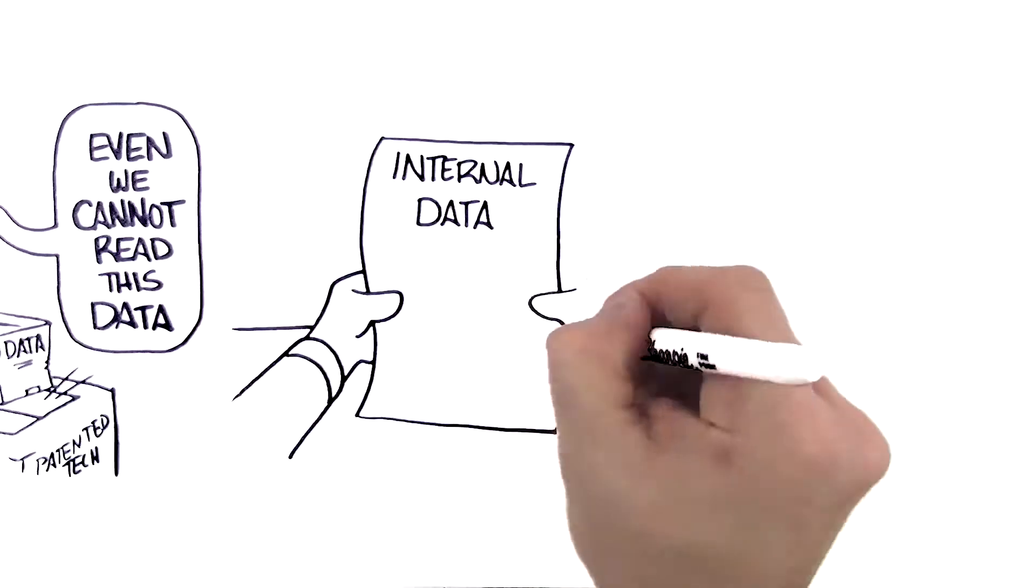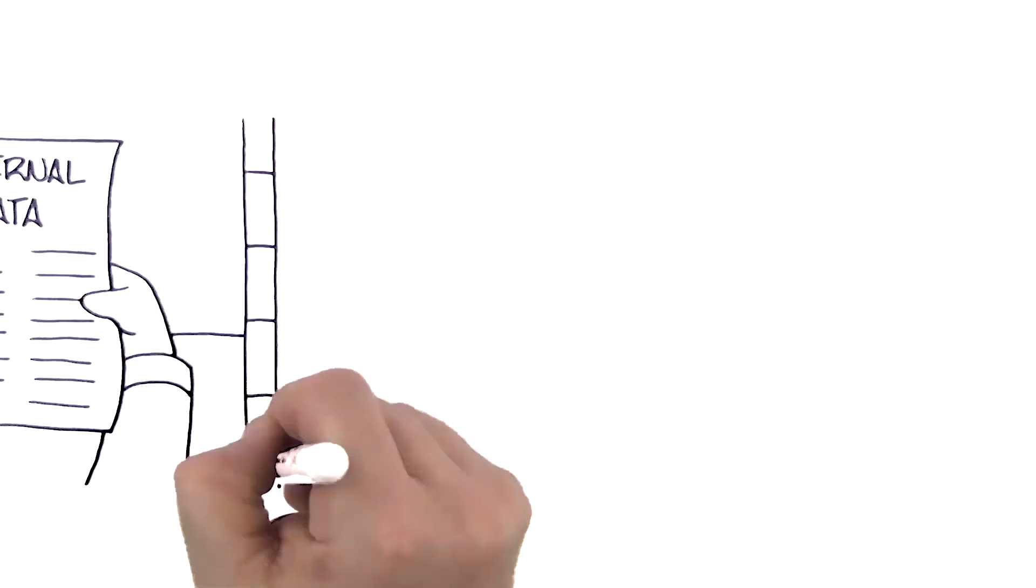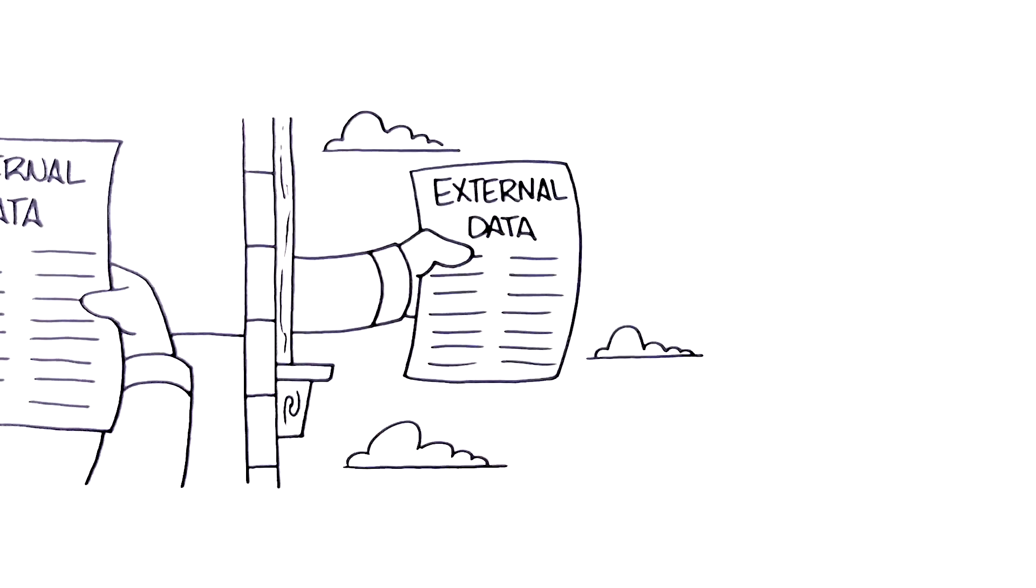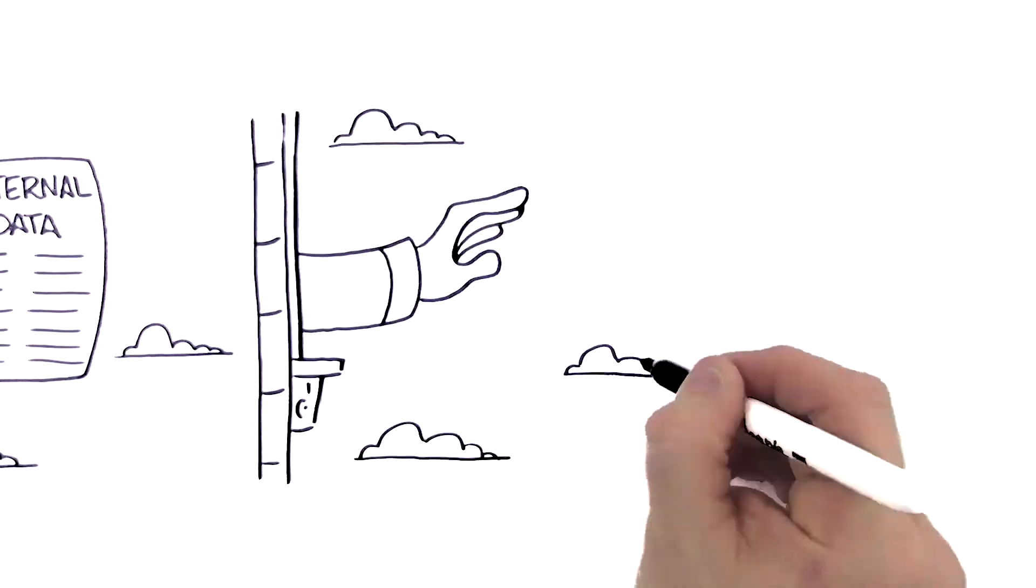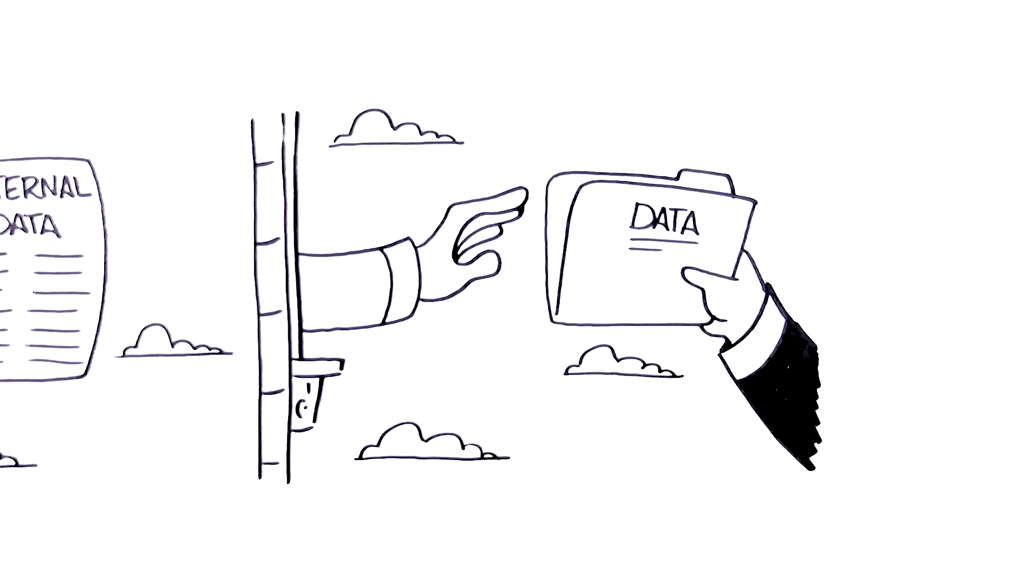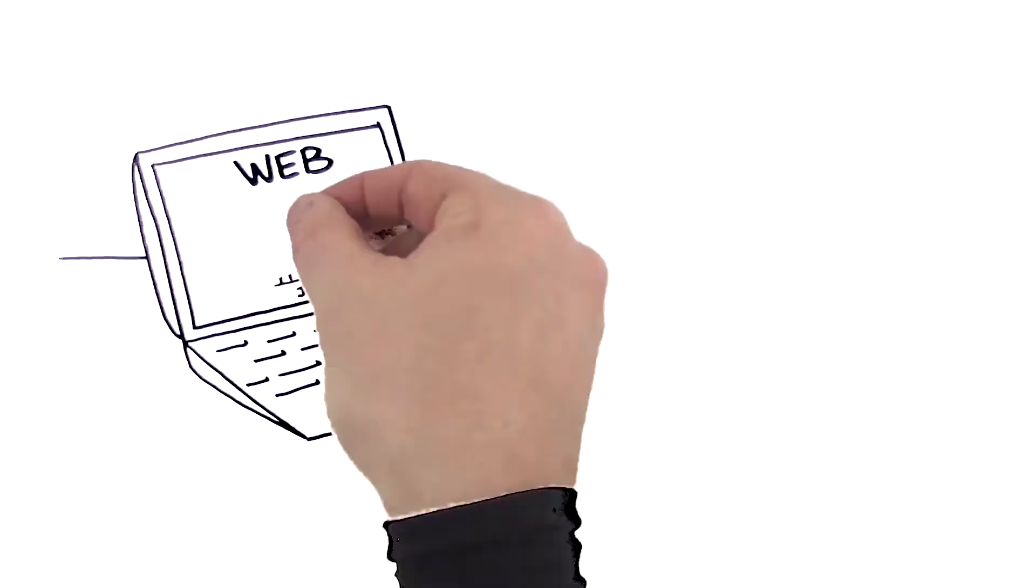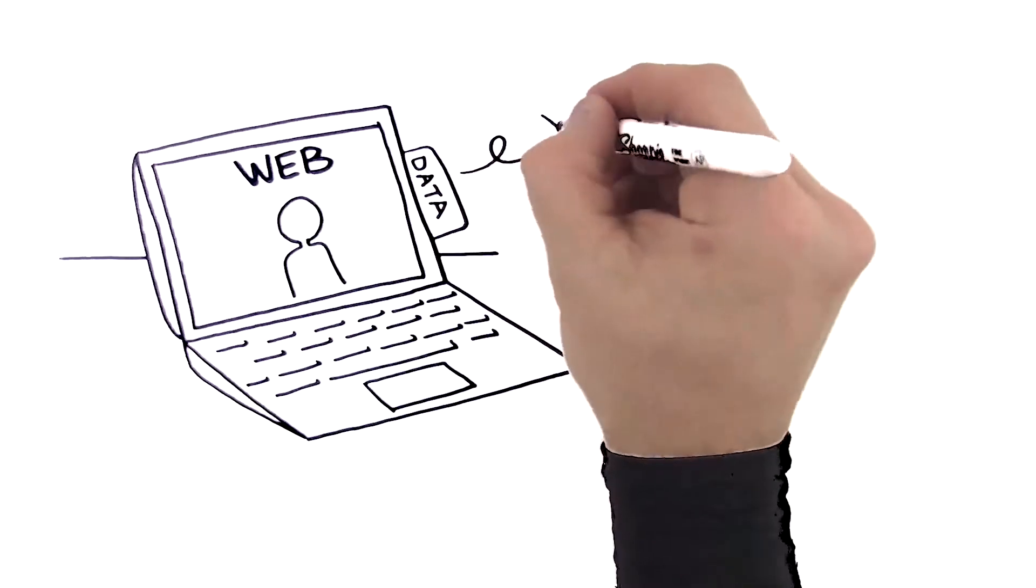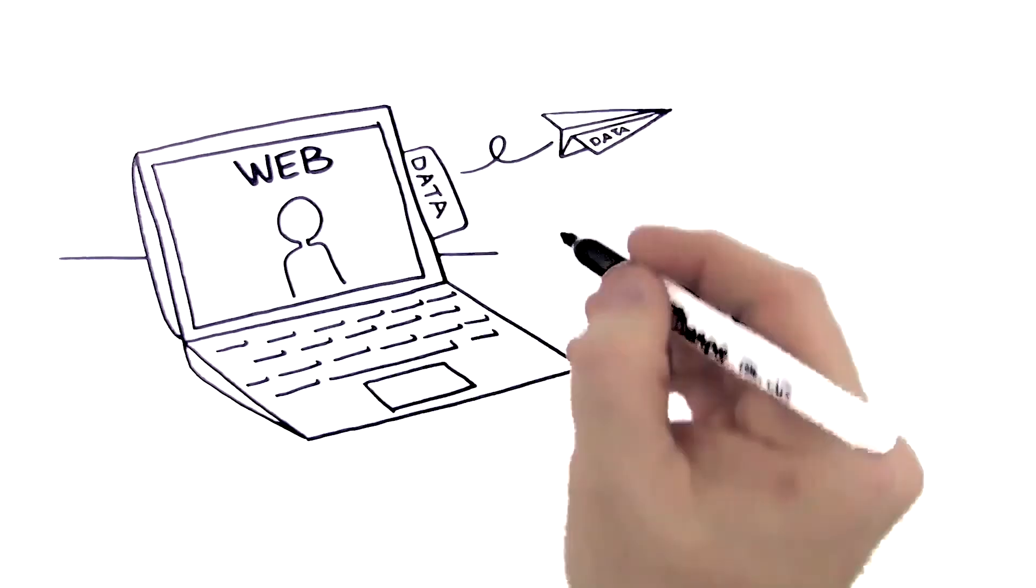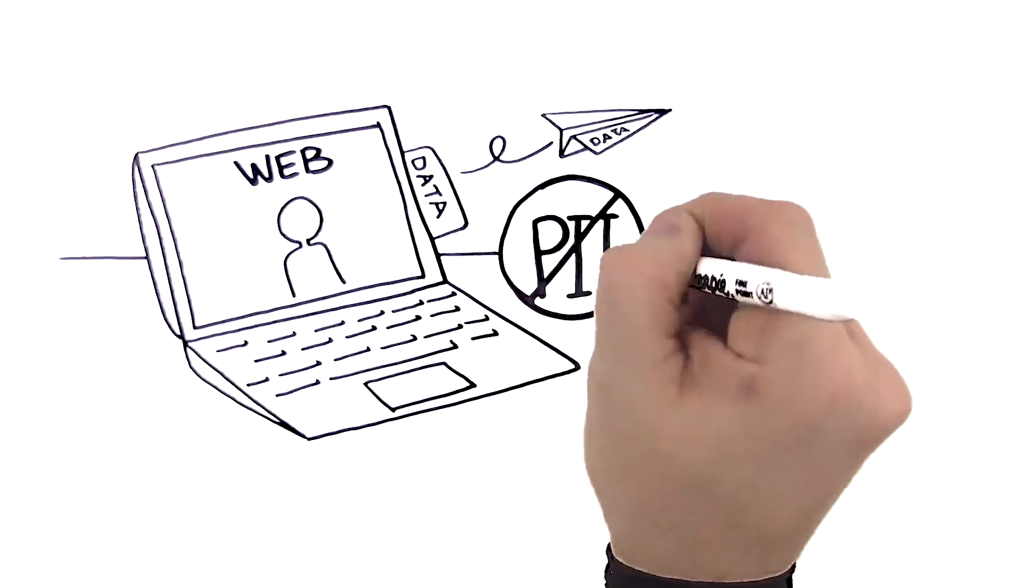So, whether you're using your data internally for data science, you're sharing it outside of your organization, or even if you're collecting data that someone else is sharing with you, our self-serve web services allow data to be anonymized at the source, so the data can be sent wherever it needs to go, without ever having to share the PII with it.